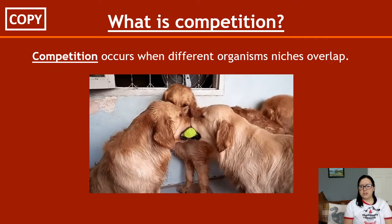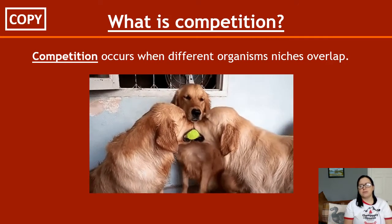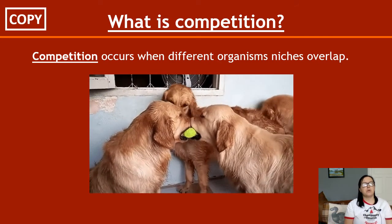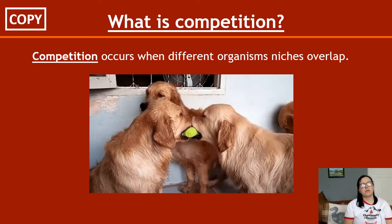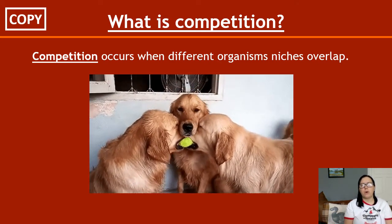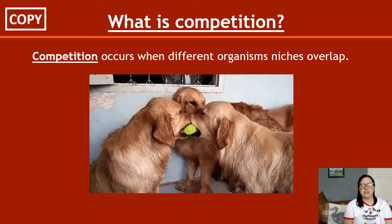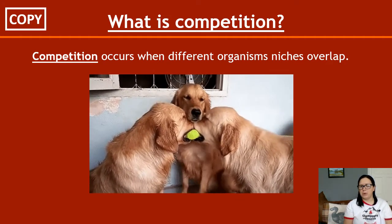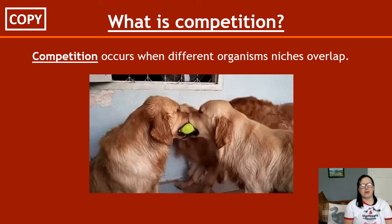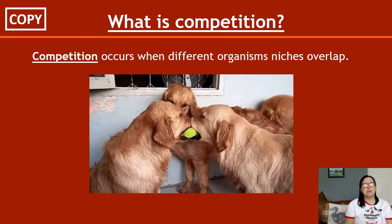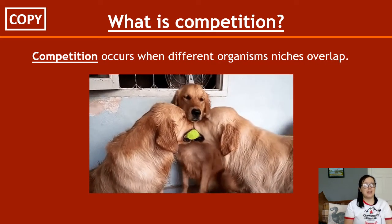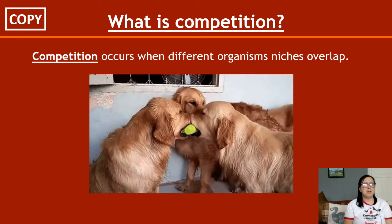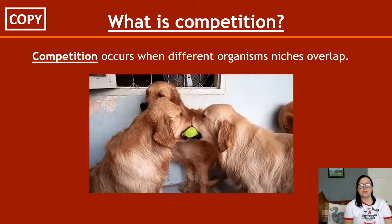Competition occurs when different organisms' niches overlap — that means when two or more organisms require the same resource. For example, the golden retrievers here all require the ball, so competition is occurring for the ball. But this could happen with water, with light for plants, or with mating partners as well, if they're the same species as each other.